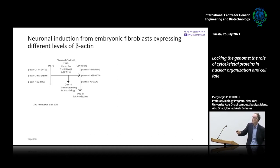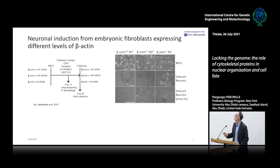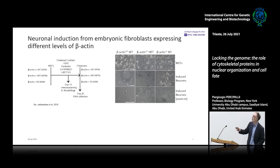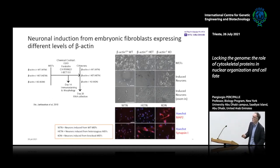We have three cell types: wild type, heterozygous, and knockout. The protocol runs approximately 21 days. We characterize cells during differentiation by immunostaining, morphology, and RNA-seq. At the end of the protocol, cells have been converted into something that are no longer fibroblasts — they are branched, with branching morphology differing between wild-type, heterozygous, and knockout. But these are neurons because they express numerous markers.